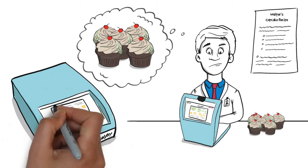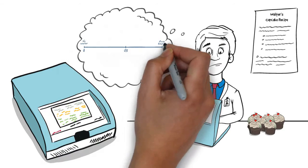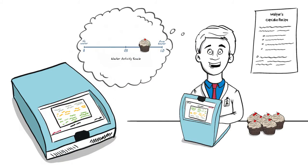If Walter had a Novacena water activity meter, he would have known that the water activity level in his cupcake is too high and he could adjust his recipe to avoid spoilage.